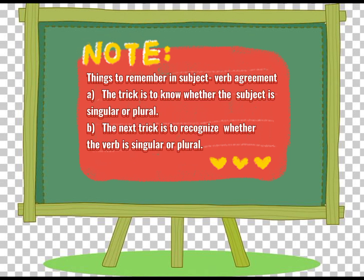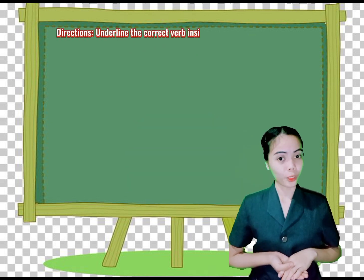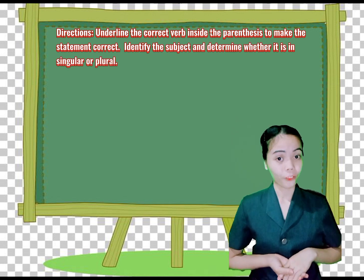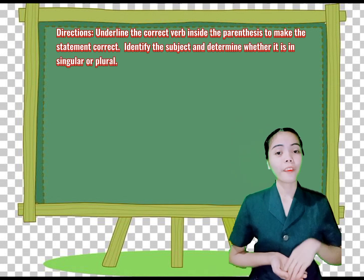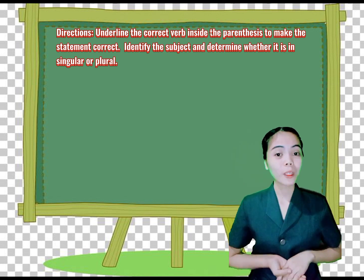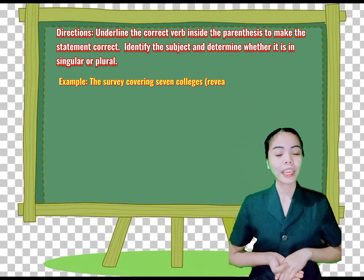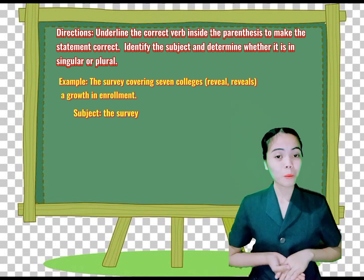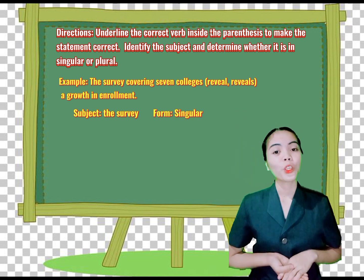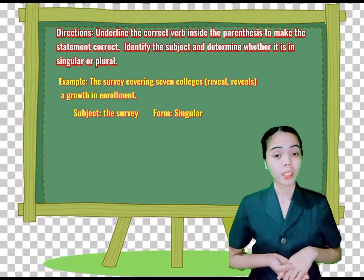The trick is to know whether the subject is singular or plural, and then to recognize whether the verb is singular or plural. Now let's assess your comprehension. Directions: underline the correct verb inside the parentheses to make the statement correct. Identify the subject and determine whether it is singular or plural. For example: 'The survey covering seven colleges reveal/reveals a growth in enrollment.' The subject here is 'the survey' and the form is singular, so the answer is 'reveals.'